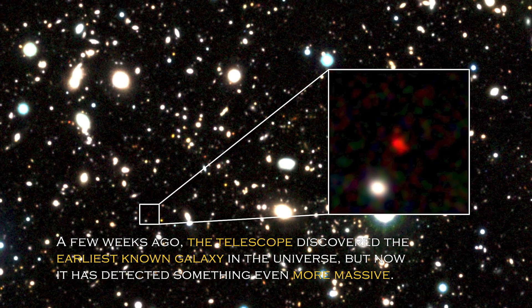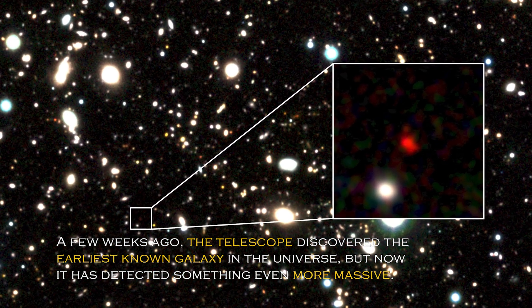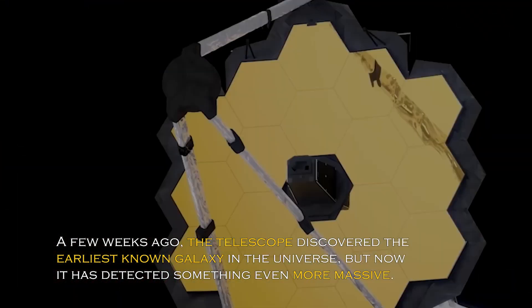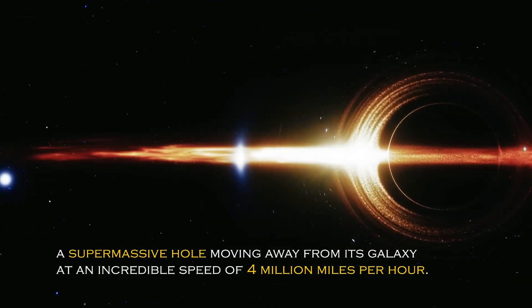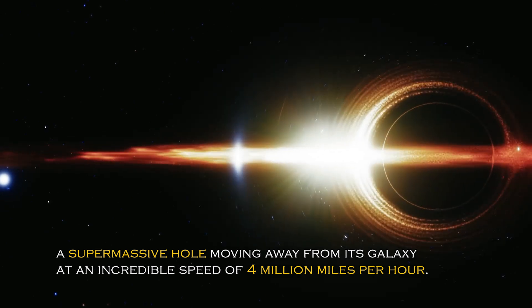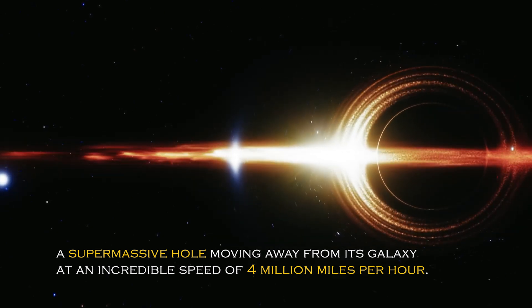A few weeks ago, the telescope discovered the earliest known galaxy in the universe, but now it has detected something even more massive – a supermassive black hole moving away from its galaxy at an incredible speed of 4 million miles per hour.